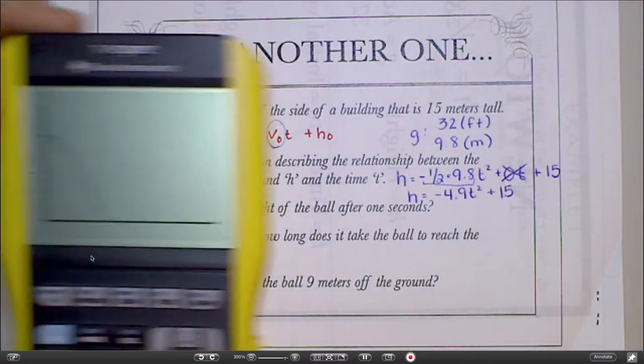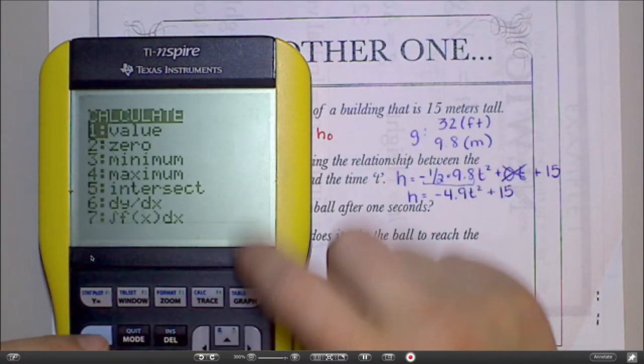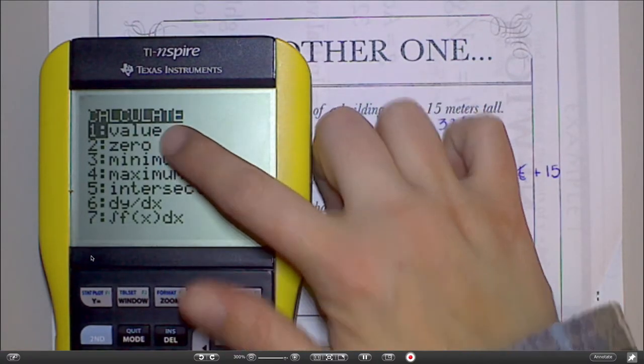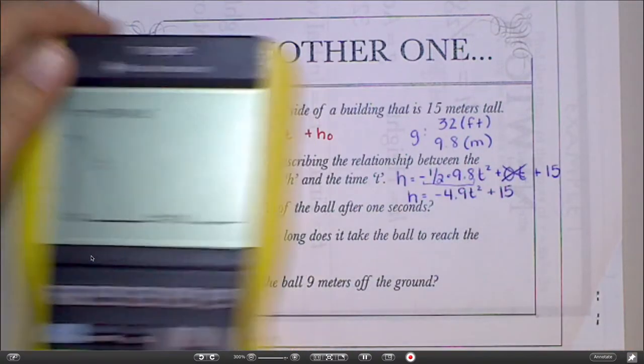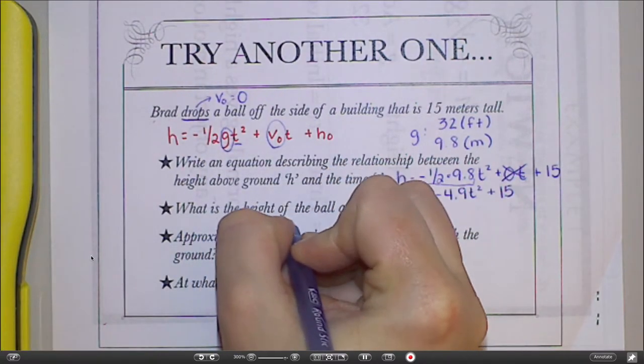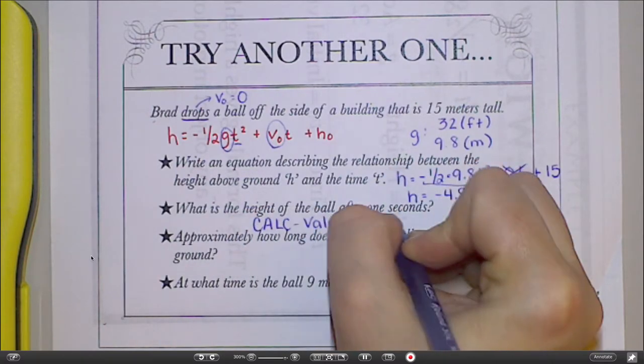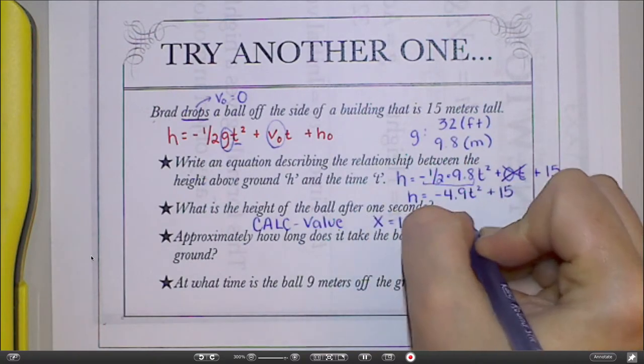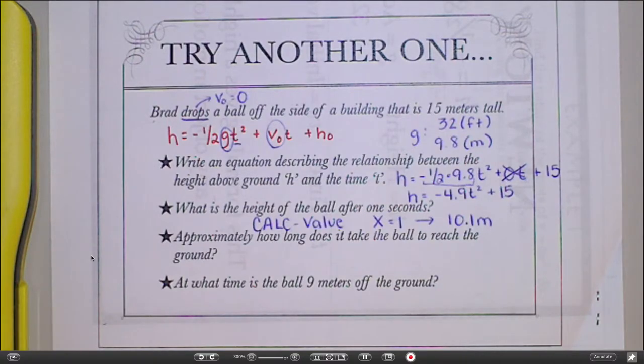All right, next question says, what is the height of the ball after one second? Well, for that, I can go to the calc menu, choose value, because that's what's going to let me type in a value for x, and then type in one second. So x equals one, hit enter. So at one second, there it is right there, you're at 10.1 meters. So to do that, I did calc value, made x equal to one, and I got an answer of 10.1 meters. And I know it's meters because this whole problem has been in meters.